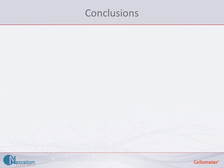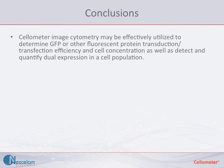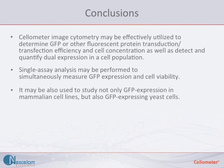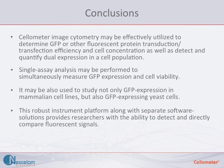In conclusion, Cellometer image cytometry may be effectively utilized to determine GFP or other fluorescent proteins' transduction or transfection efficiency, calculate cell concentrations, and detect and quantify dual expression in a population such as GFP and RFP positive. Single-assay analysis may be performed to simultaneously measure GFP expression and cell viability by staining the cells with propidium iodide. It may also be used to study GFP expression in mammalian cell lines as well as in GFP expressing yeast cells using the Vision 10x instrument. This robust instrument platform, along with separate software solutions, provides researchers with the ability to detect and directly compare fluorescent signals.